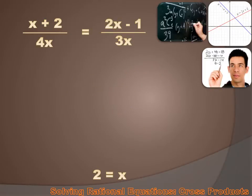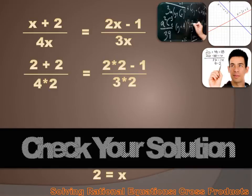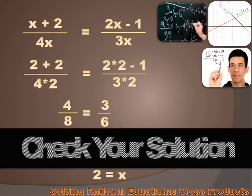It's always a good idea to check our solutions. In this case, our solution was x equals 2. So if we substitute 2 for x in our original equation, it should all work out fine. When we substitute 2 for x, we get 2 plus 2 over 4 times 2 equals 2 times 2 minus 1 over 3 times 2, which is 4 over 8 equals 3 over 6, which is 1 half equals 1 half. Which is true.